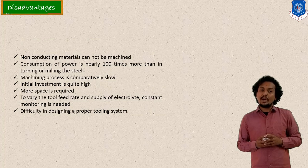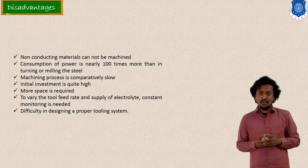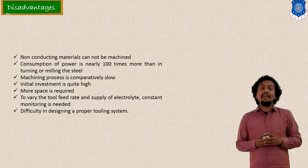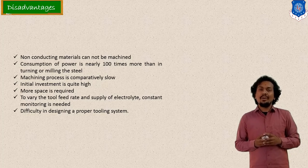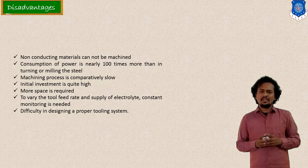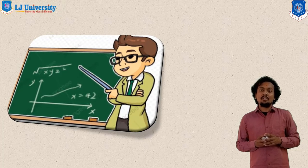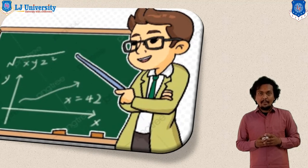There are also limitations to consider. Current consumption is very high for this process — large ampere currents are passed, making power consumption very high. This process can only be used for electrically conducting materials; non-conducting materials cannot be machined. Additionally, floor space requirement is very high for this process.